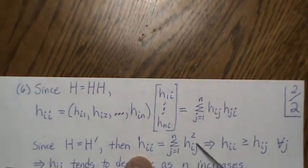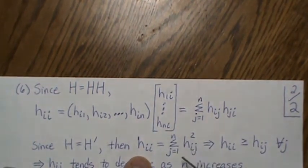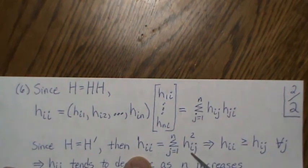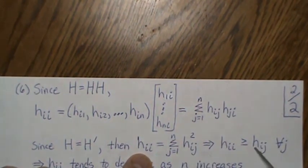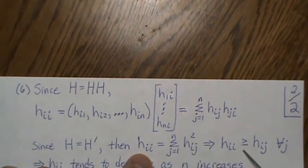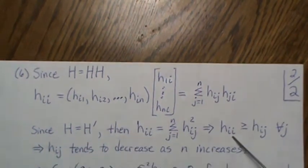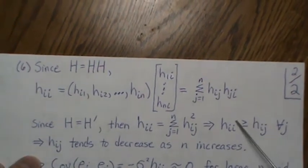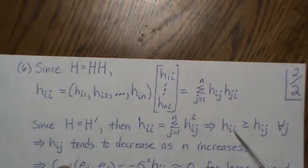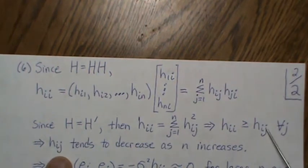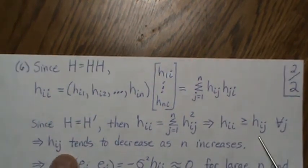And so these are all positive numbers, we're adding up positive things. So that says that h i i has to be bigger than one of them, or equal if they're all zero. So that implies, since as n increases this tends to decrease, that the off diagonal elements also tend to decrease as n increases.